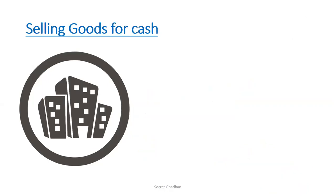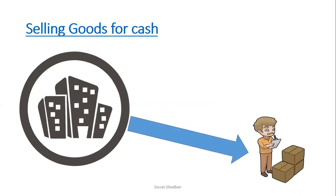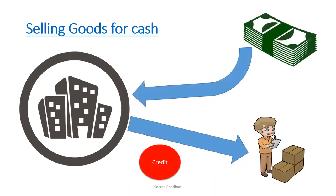The final transaction is selling goods for cash. The company is providing goods, and since it's providing them, it means it's credit. And since it's providing goods, it means it's earning revenue. So the normal balance of revenue is a credit. In return, they receive cash, so the cash is increasing, which means it's debit.